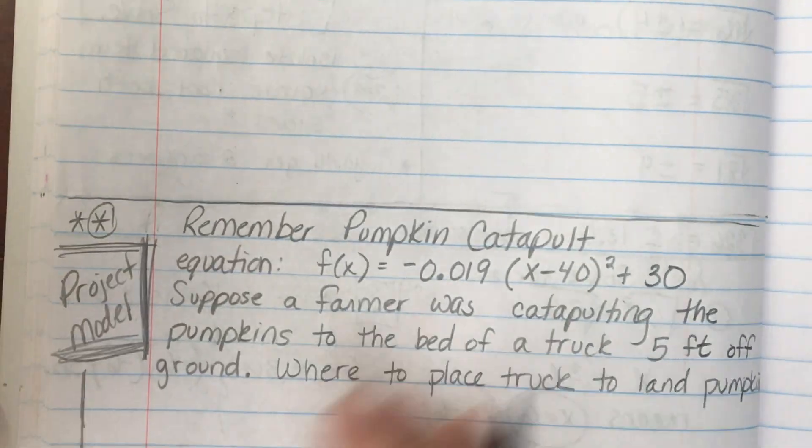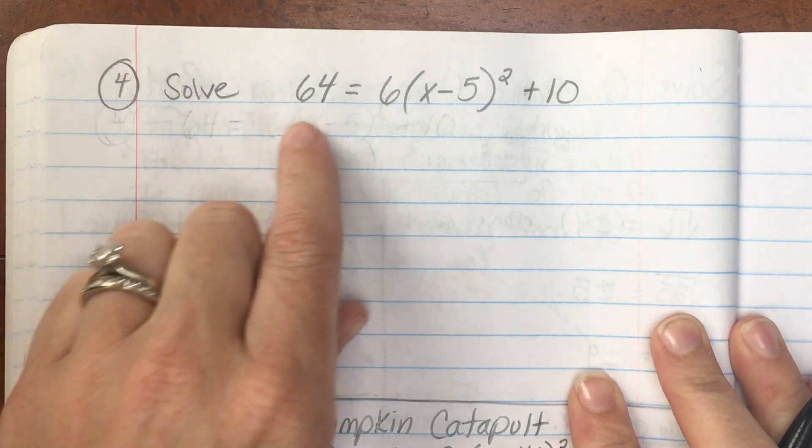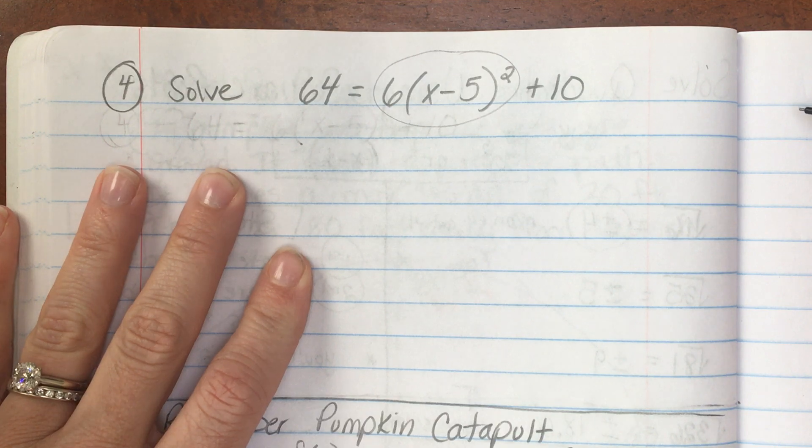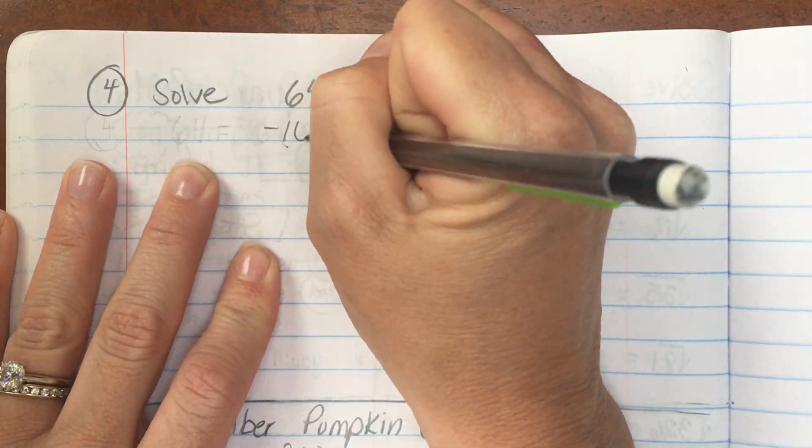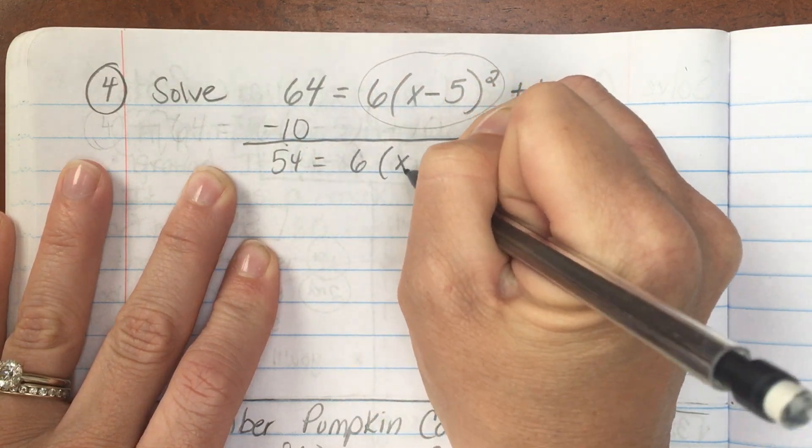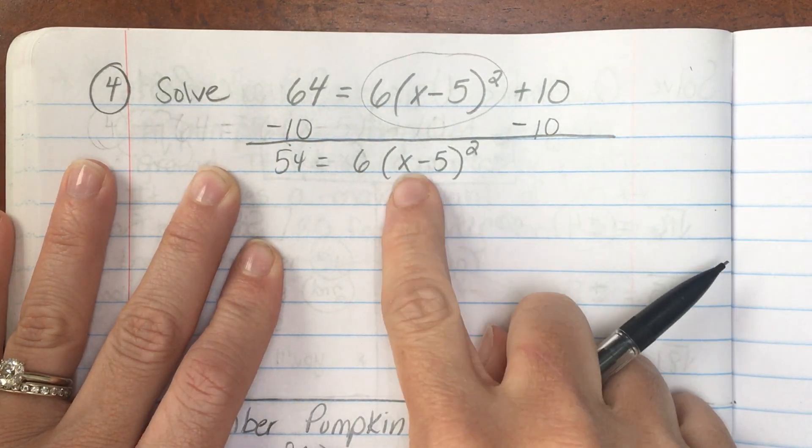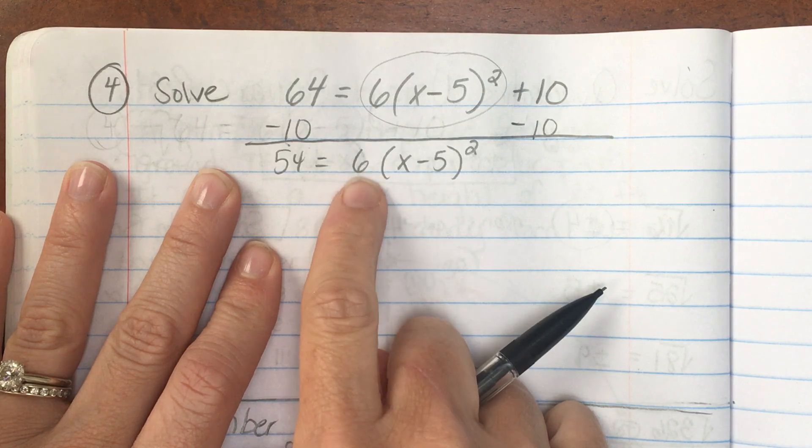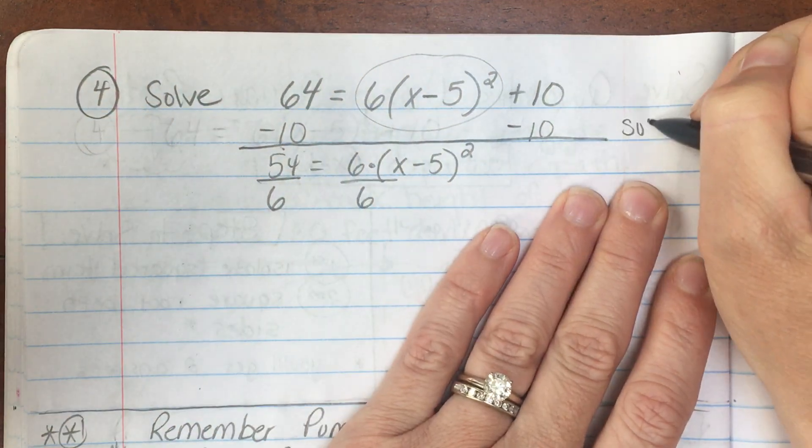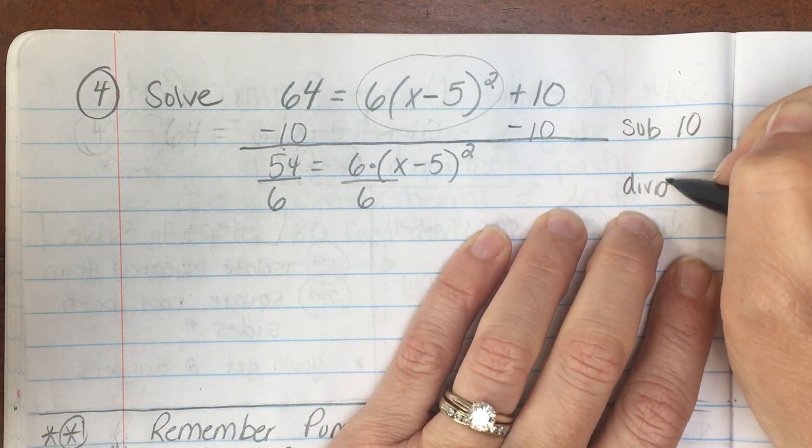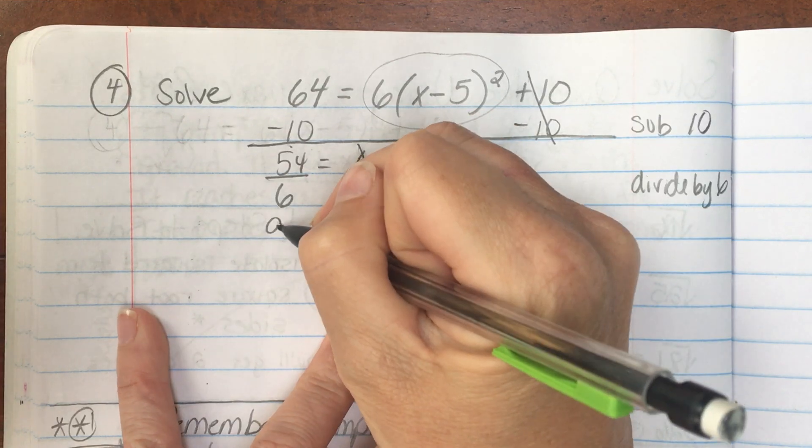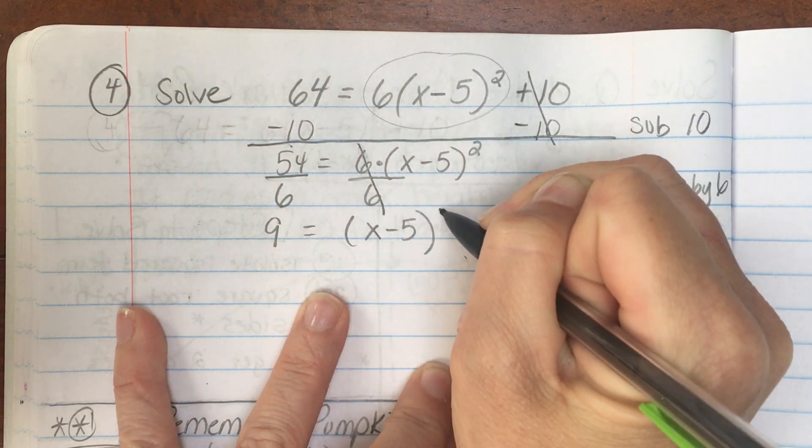Next page. Number 4. Copy that equation. Solve 64 equals 6 times x minus 5 squared plus 10. Your squared term is not isolated. So, first step, subtract 10 to both sides. And I get 54 equals 6 times x minus 5 squared. My squared term is not isolated. I have to move the 6. 6 is not getting squared. To undo this multiplying, I'm going to divide. So if you wanted to write notes, we had to subtract 10. And then we had to divide by 6 to both sides. That cancels this out. And I get 9 equals x minus 5, that quantity, squared.